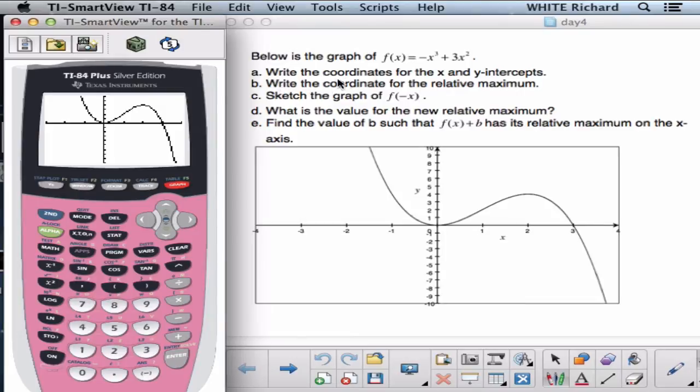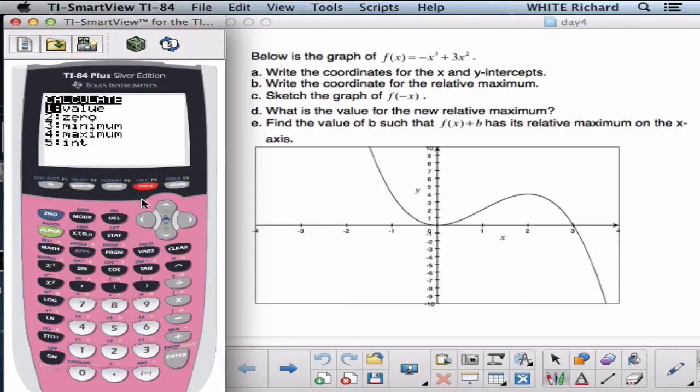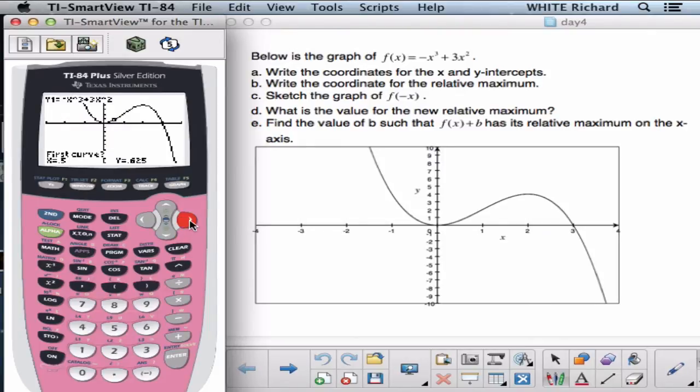Alright, write the coordinates of the x and y intercepts. Second calc. Let's go y equals first and type in y equals 0 into y2. Let's go second calc. Let's go intersect. Oops, number 5. And we're just going to travel over to this other one. Looks like 3. Pretty sure it's 3.